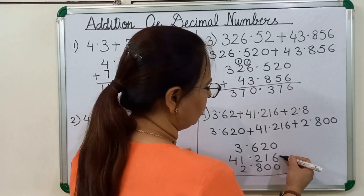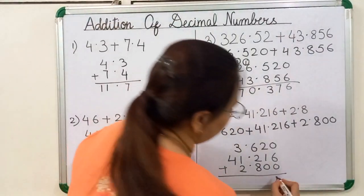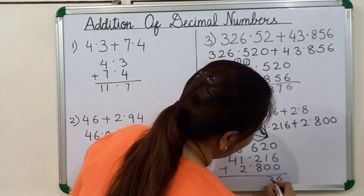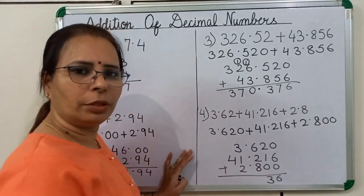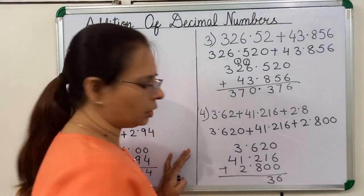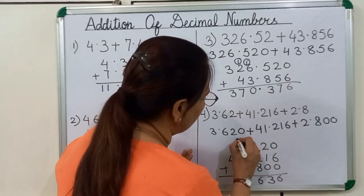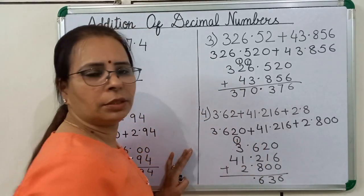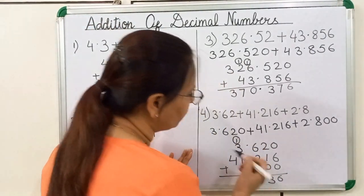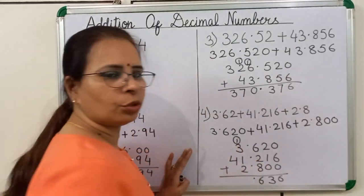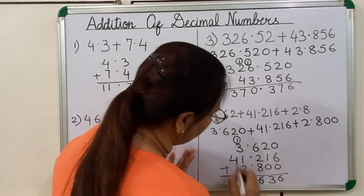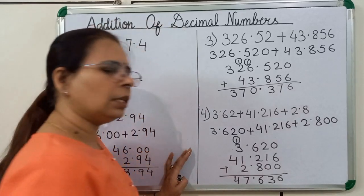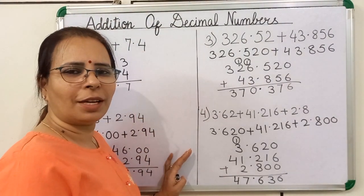Now we will start addition. 0 plus 6 is equal to 6. 6 plus 0 is equal to 6. Now 2 plus 1 is equal to 3, 3 plus 0 is equal to 3. Now 6 plus 2 is equal to 8, 8 plus 8 is equal to 16 — we will write 6 and 1 is carried over. Now we will put the decimal point. 3 plus 1 is equal to 4, 4 plus 1 is equal to 5, 5 plus 2 is equal to 7. Here only 4 is there, we will write 4. So 47.636 is the answer. I hope you understand today's topic.